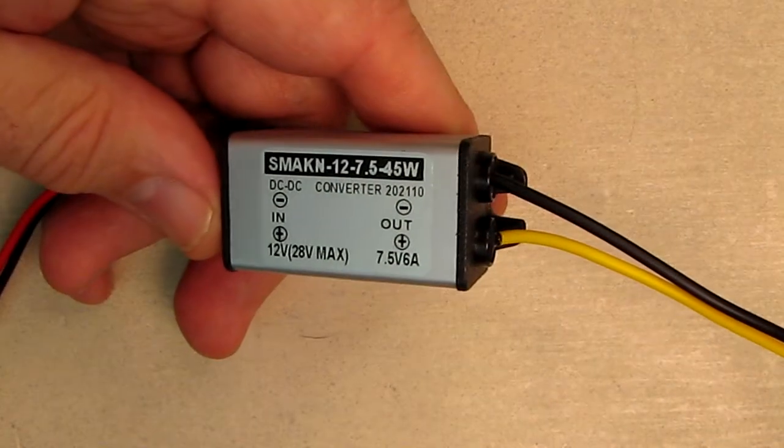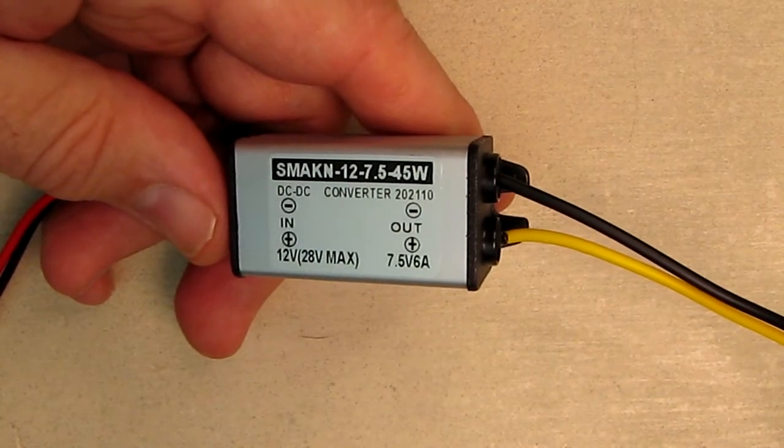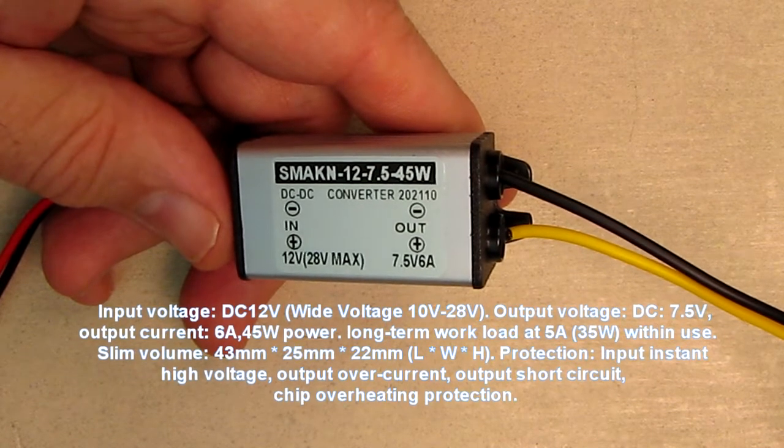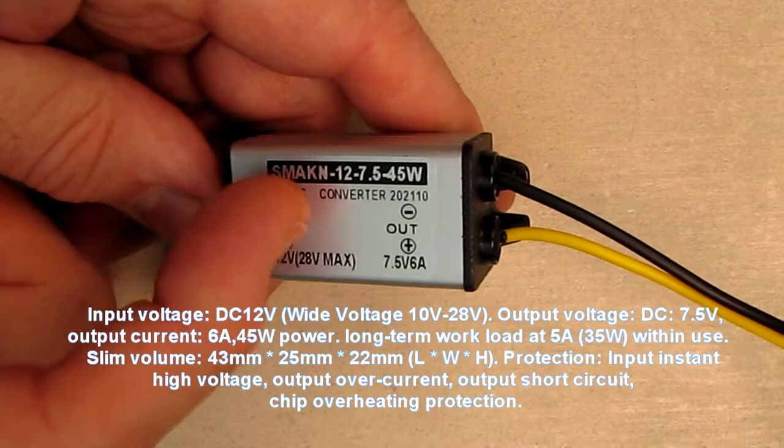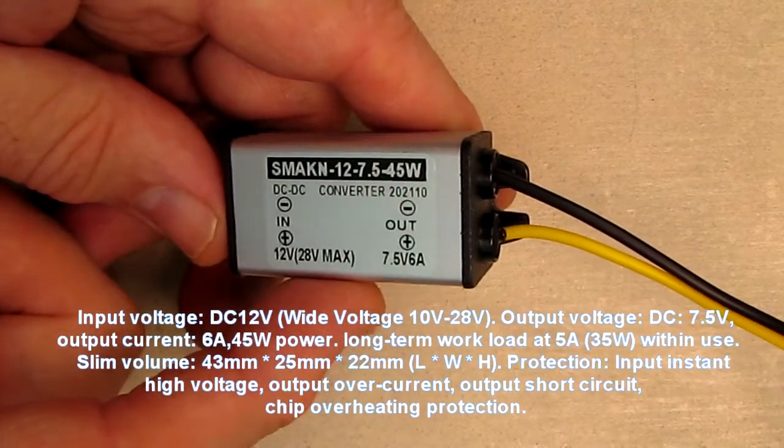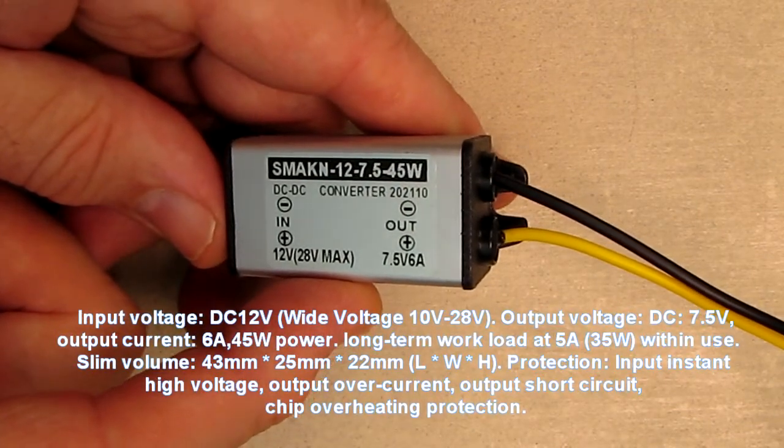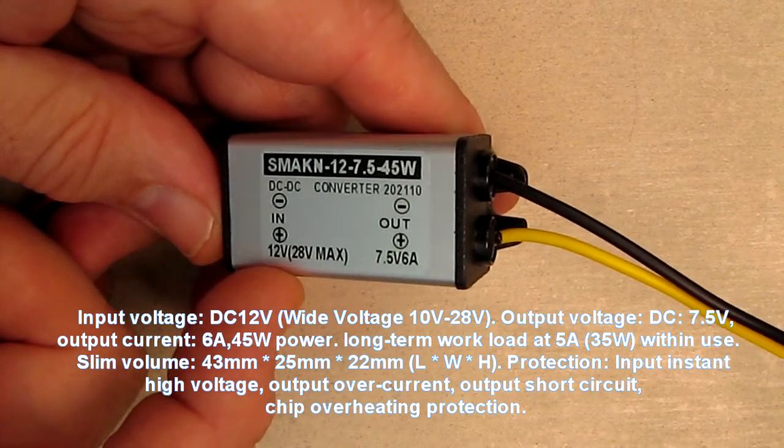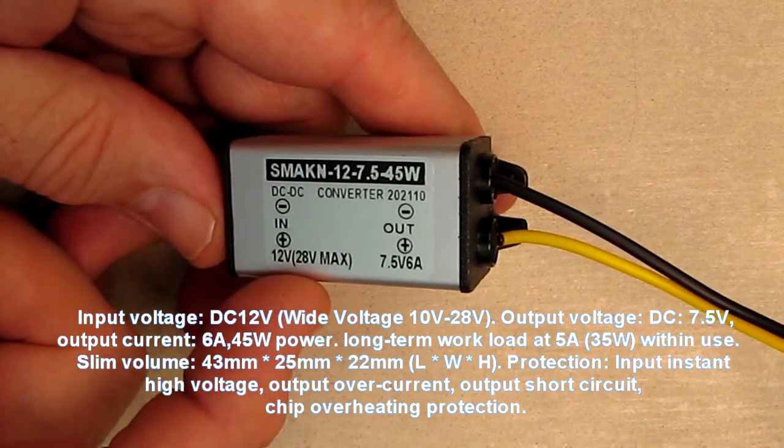Hello again, this is Robert Veach here, and this is my video review of a DC to DC converter, the 202110. You can see the brand name right there. That's the part number and it works up to 45 watts on the input side, 12 to 28 volts, with 28 volts being the max.